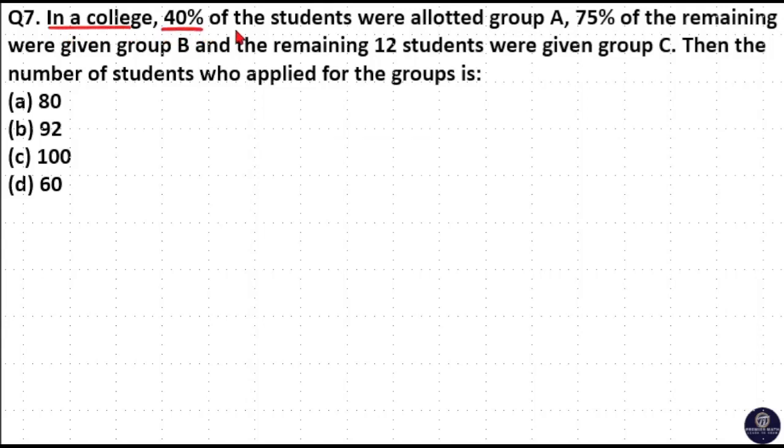In a college, 40% of the students were allotted group A, 75% of the remaining were given group B, and the remaining 12 students were given group C. Then the number of students who applied for the groups is: